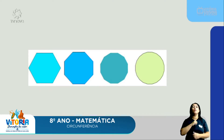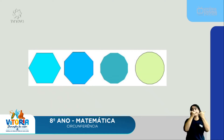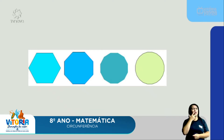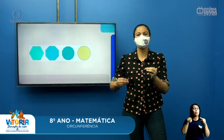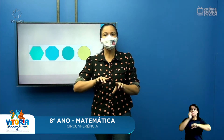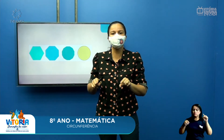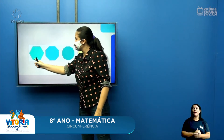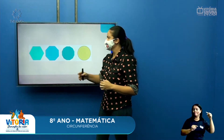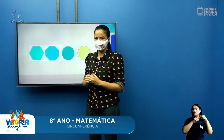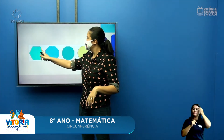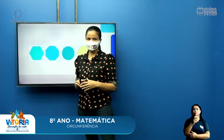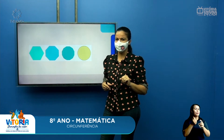Trouxe umas figuras geométricas para vocês observarem qual chega mais próximo ao círculo. Quanto mais lados ela tiver, mais a forma circular ela vai tendo. Essa primeira figura geométrica tem seis lados — não chegou muito próximo a um círculo.